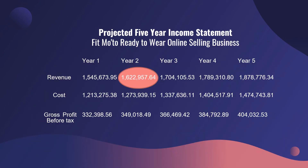Let's look at the example: Fit Moto Ready-to-Wear Online Selling Business and its projected five-year income statement. For year one, the revenue is 1,545,673.95 pesos, less cost of 1,230,275.38, giving a gross profit before tax of 332,398.56. We made assumptions that revenue increases by five percent and cost increases by five percent in consecutive years.